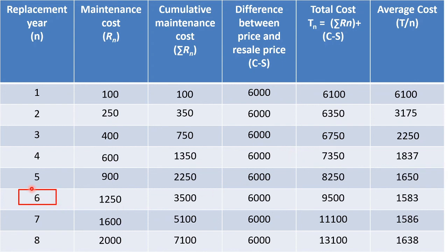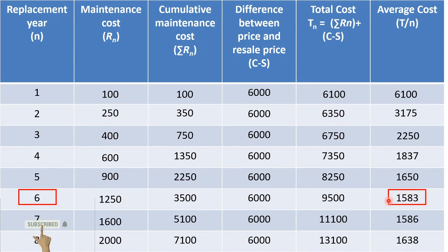At the end of the sixth year, this value has the minimum cost. Up to the sixth year the average cost is reducing, and after the sixth year the average cost is increasing. So we can say it is better to replace this machine after the sixth year because the average cost is minimum at this point. Therefore, the economical life of this machine is six years, and that is the best time to replace it.